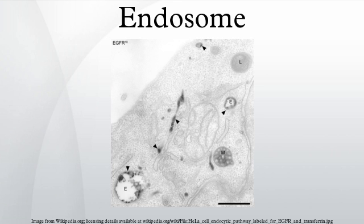Fusion of late endosomes with lysosomes has been shown to result in the formation of a hybrid compartment, with characteristics intermediate of the two source compartments. For example, lysosomes are more dense than late endosomes, and the hybrids have an intermediate density. Lysosomes reform by recondensation to their normal, higher density. However, before this happens, more late endosomes may fuse with a hybrid. Some material recycles to the plasma membrane directly from early endosomes, but most traffics via recycling endosomes.